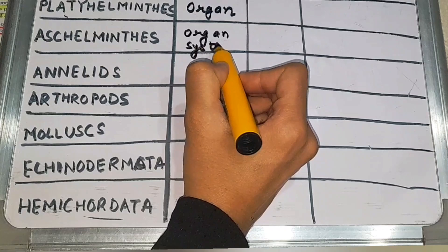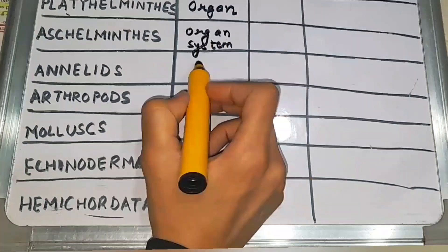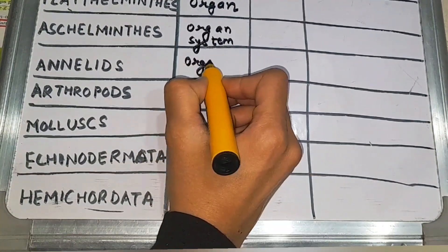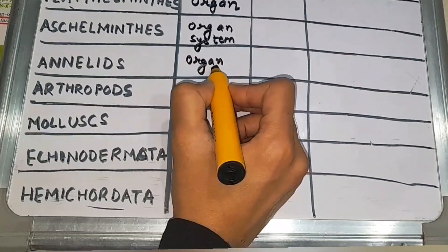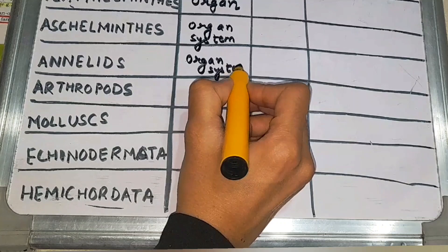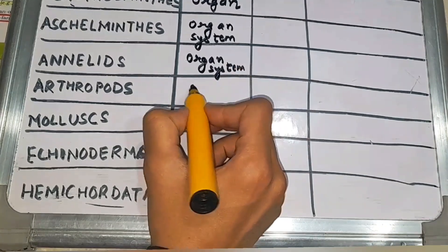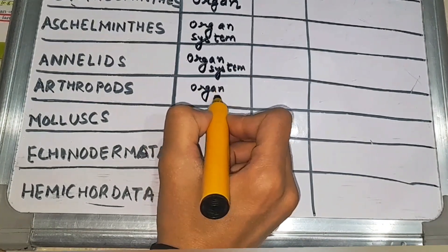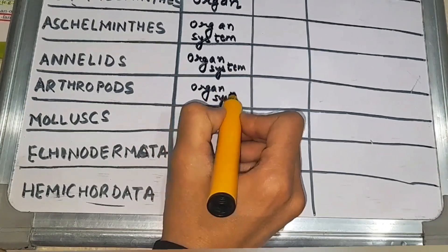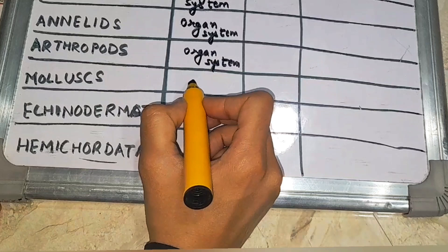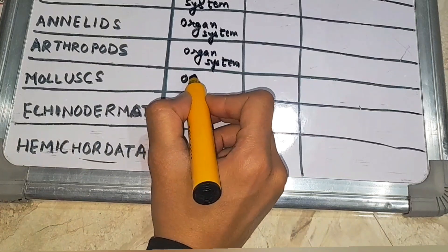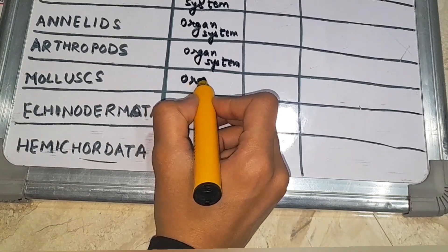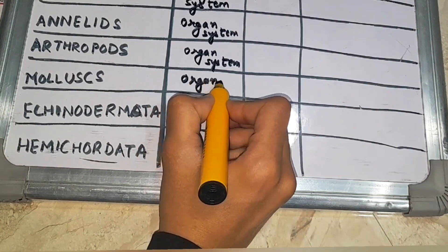It is easier to remember by making a table form of all the phylums so that you can memorize and quickly learn. So, from Aschelminthes till Hemichordata, all have organ system level of organization.